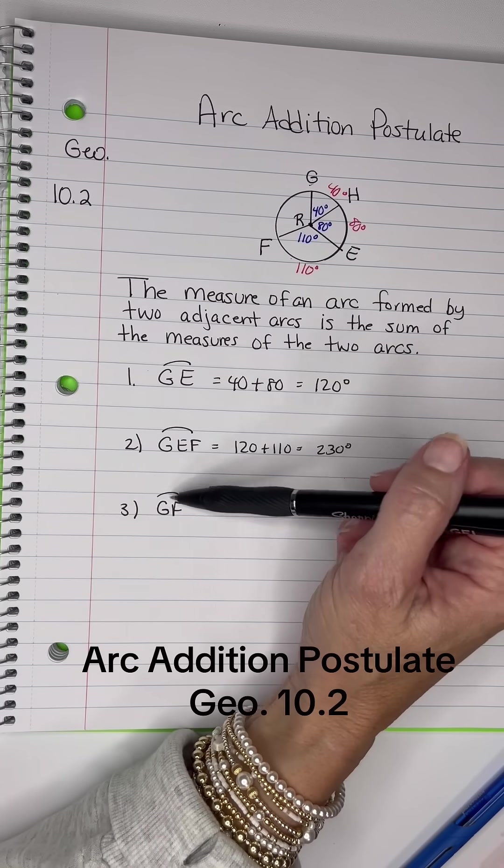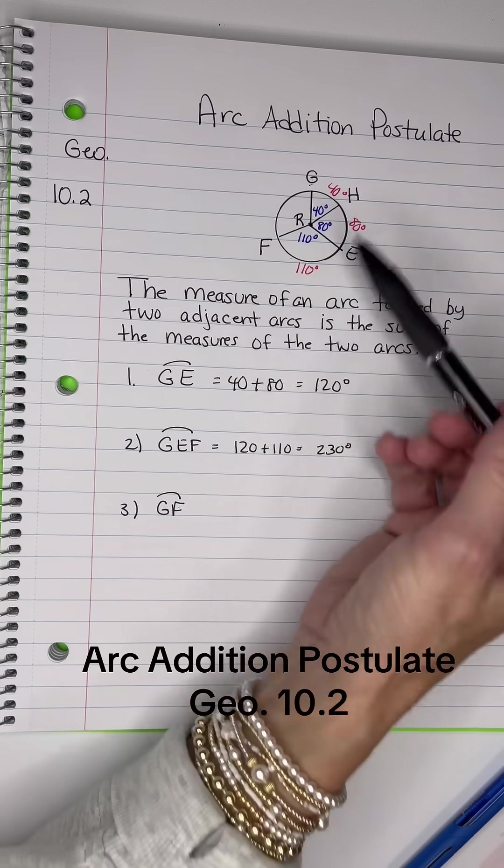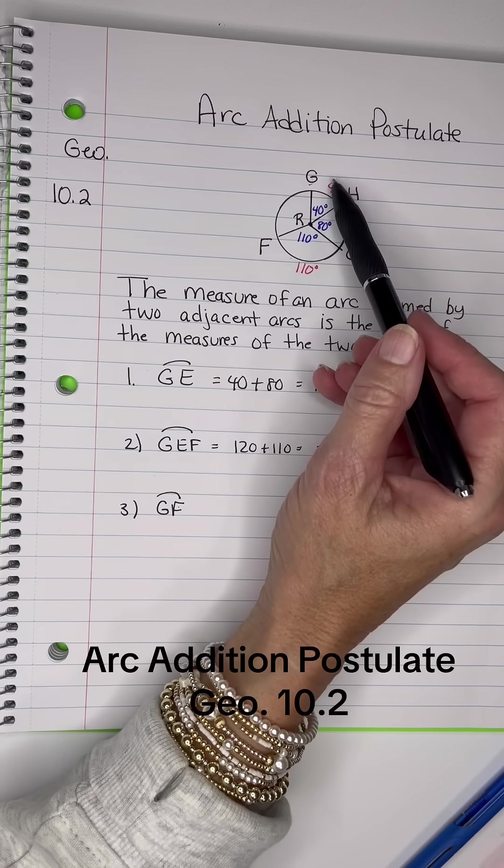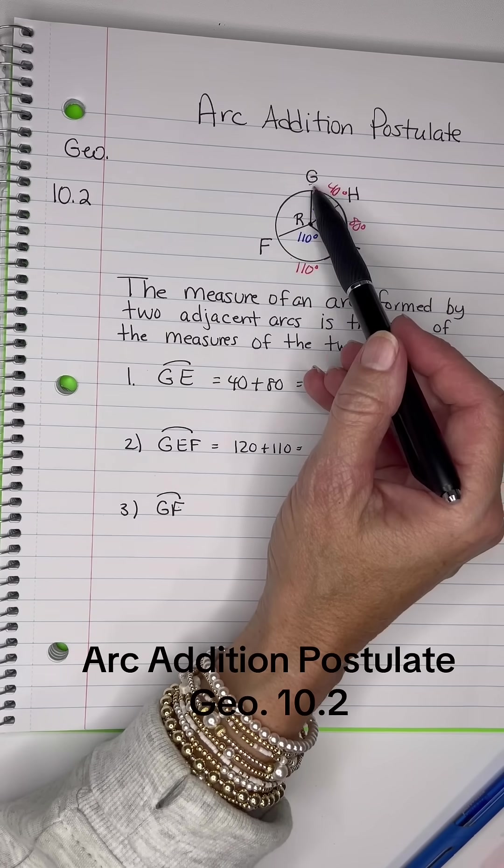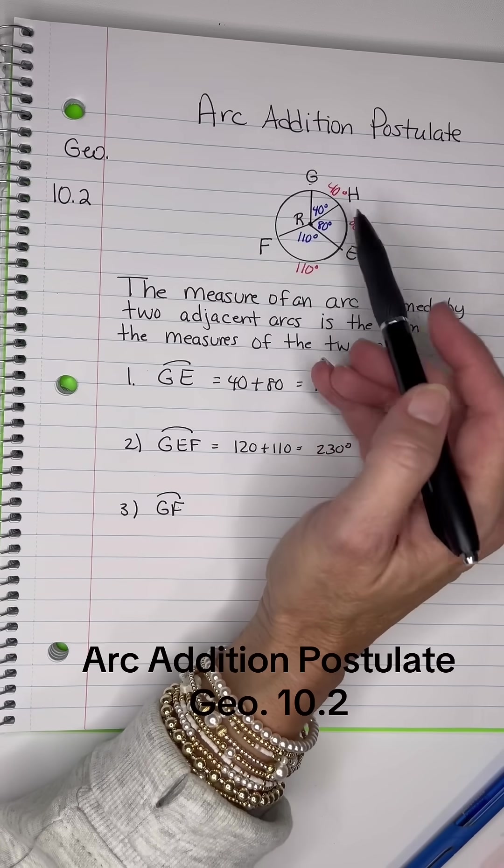All right, now they're asking us for GF, minor arc. We know that all of this was 230 degrees, and this is what's left. There's 360 degrees in a circle.